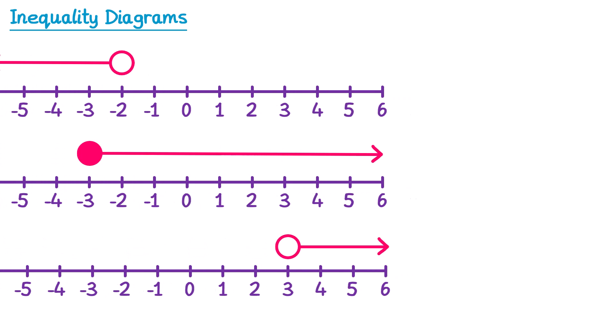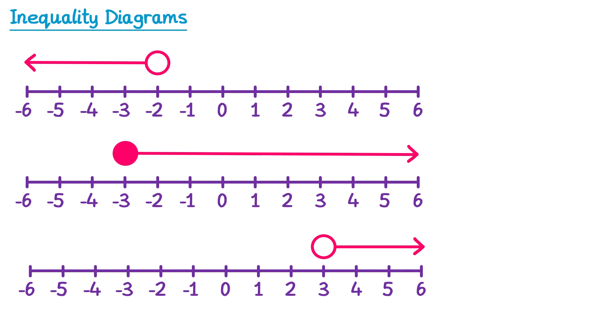Sometimes we have to do these questions in reverse — a diagram could be drawn for you and you have to write down the inequality. For this first one, we write down the letter x. Then we decide on the inequality symbol: the numbers are to the left, so they are less than negative 2, and the circle is not shaded, so I use a less than symbol. So it's less than, and then we finish with the number that the circle is above — negative 2.